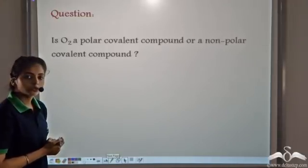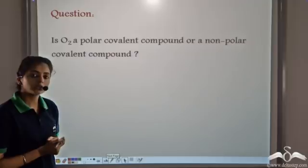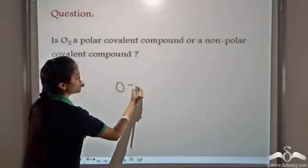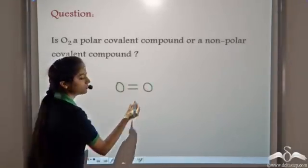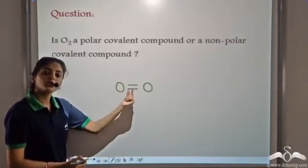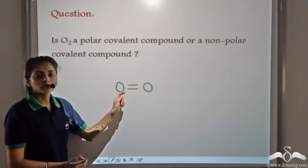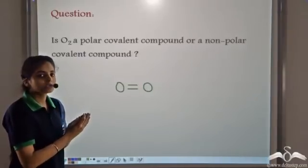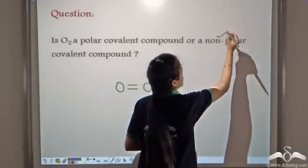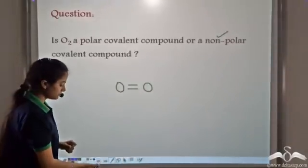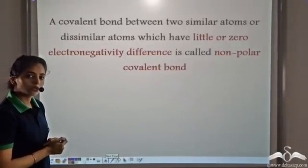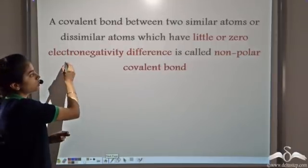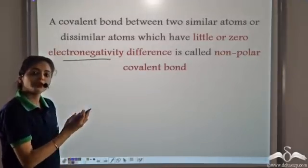Is O2 a polar covalent compound or a non-polar covalent compound? We know that O2 is formed by a double covalent bond. Both the oxygen atoms are of equal electronegativity, so the shared pair of electrons are equally shared by the two atoms. This is the reason why O2 is a non-polar covalent compound.